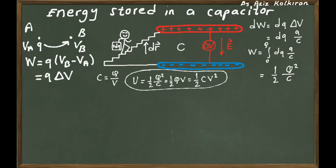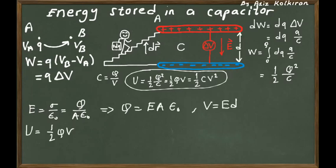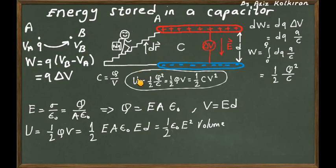You can also express the total energy in terms of the electric field. Since the charge density can be related to the electric field, you can express the charge stored in the capacitor in terms of E. This gives the energy stored in any region of space with an electric field as U = ½ε₀E² times the volume of the region between the plates — the same expression as for the energy density of an electric field.